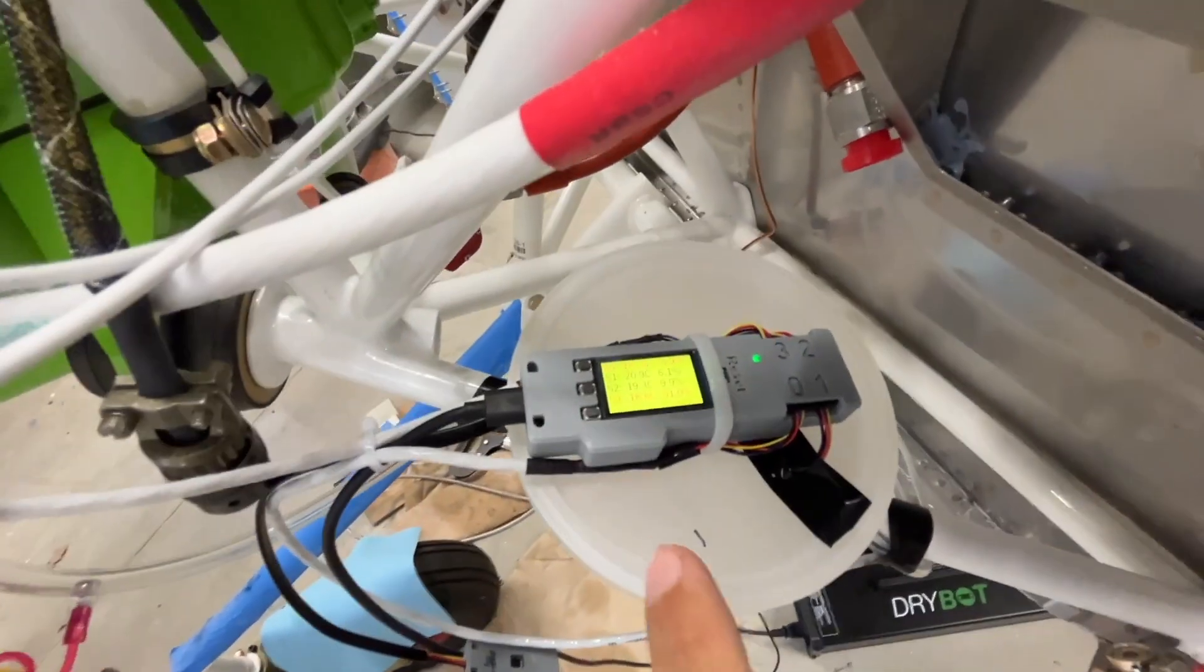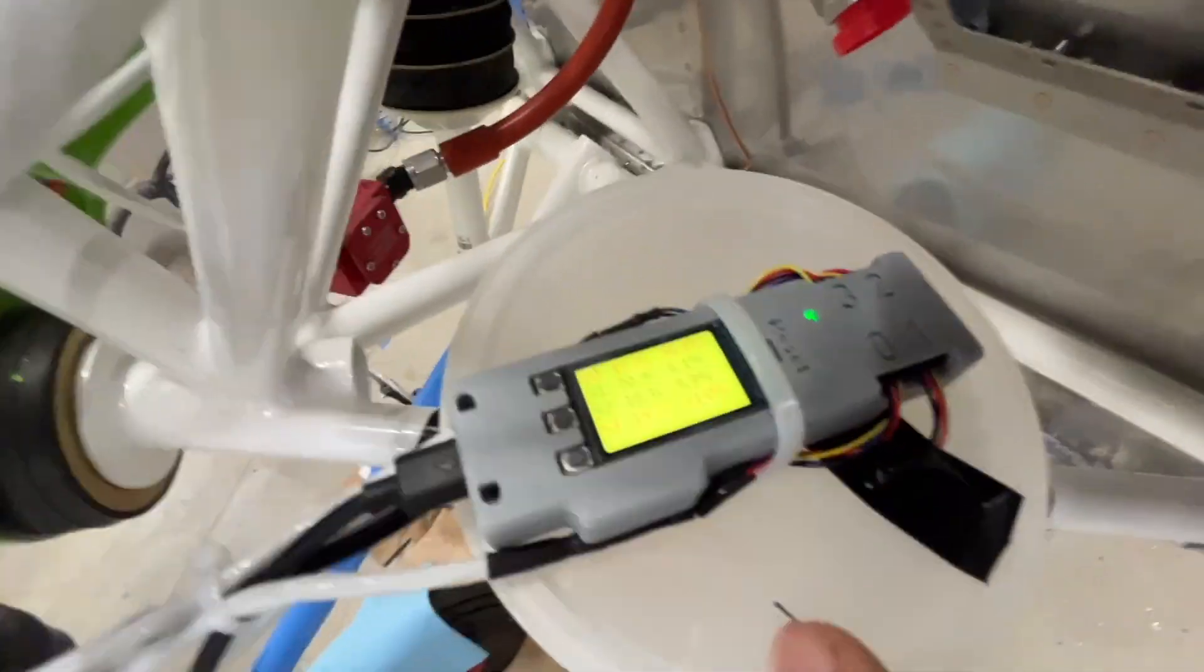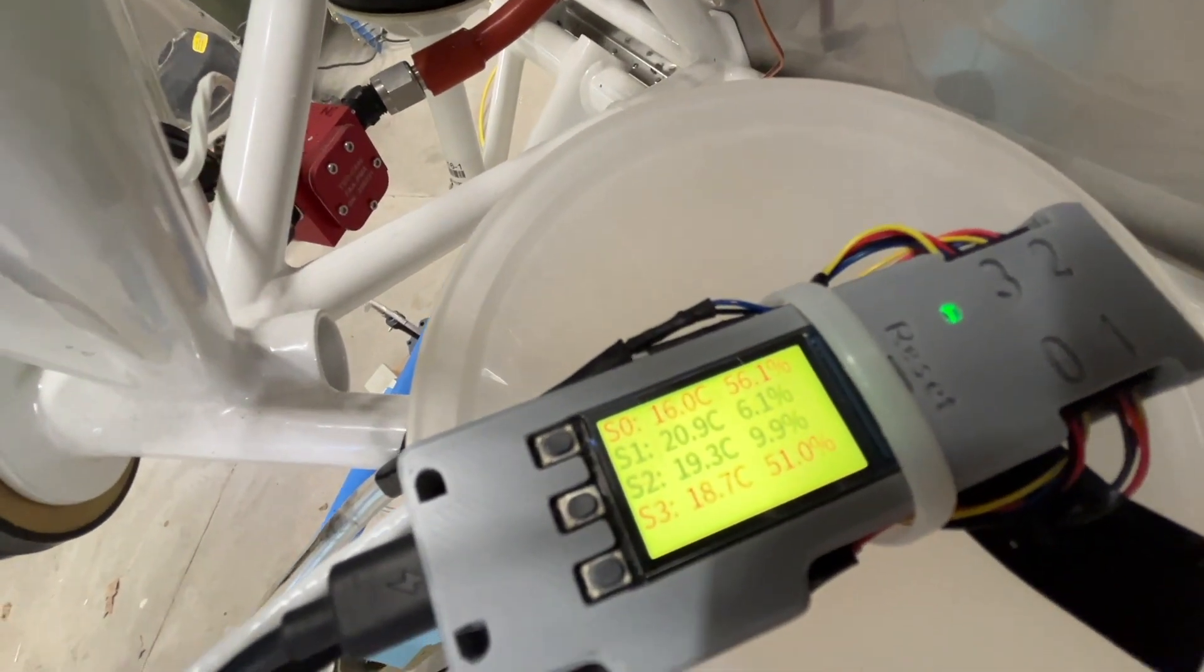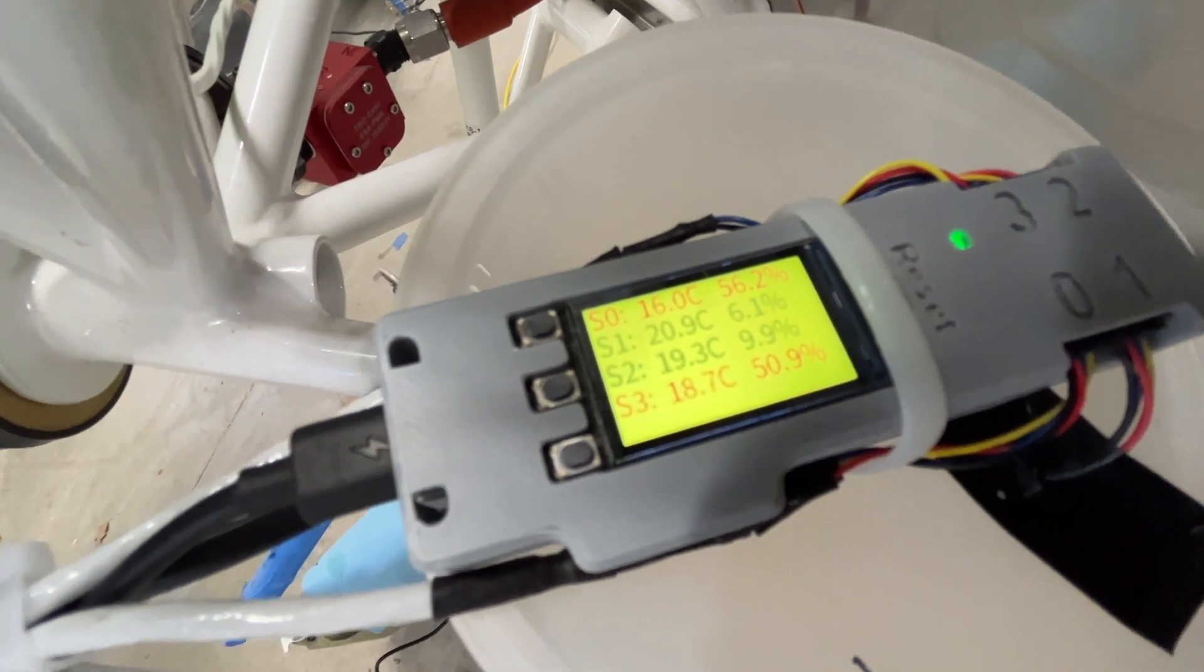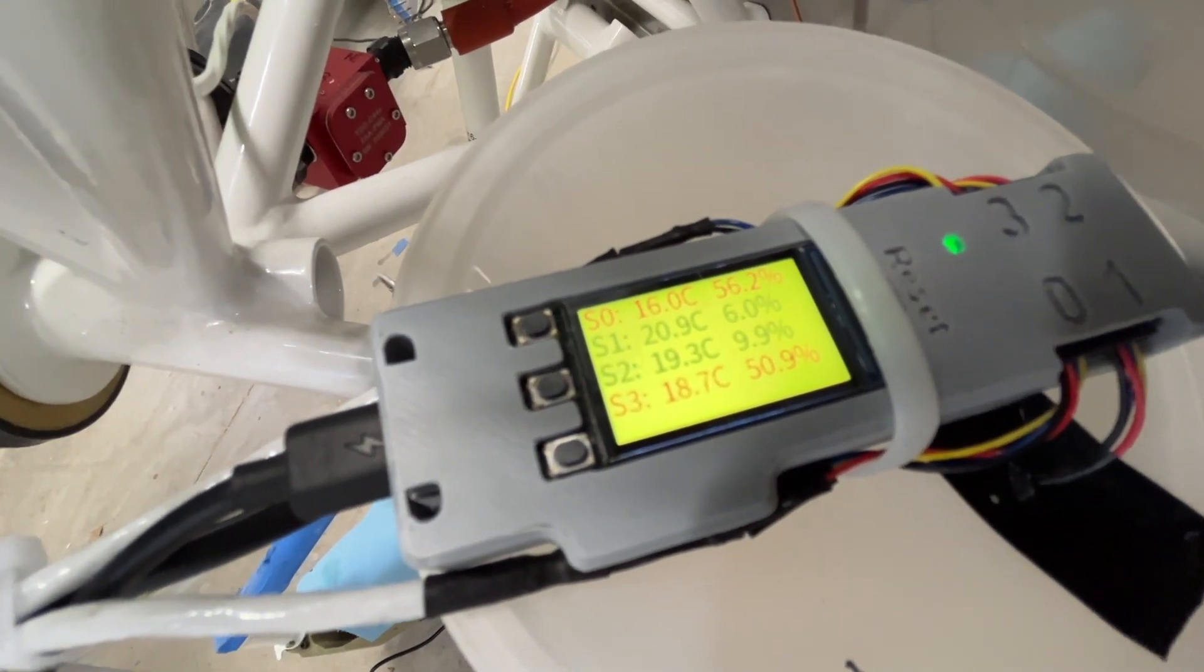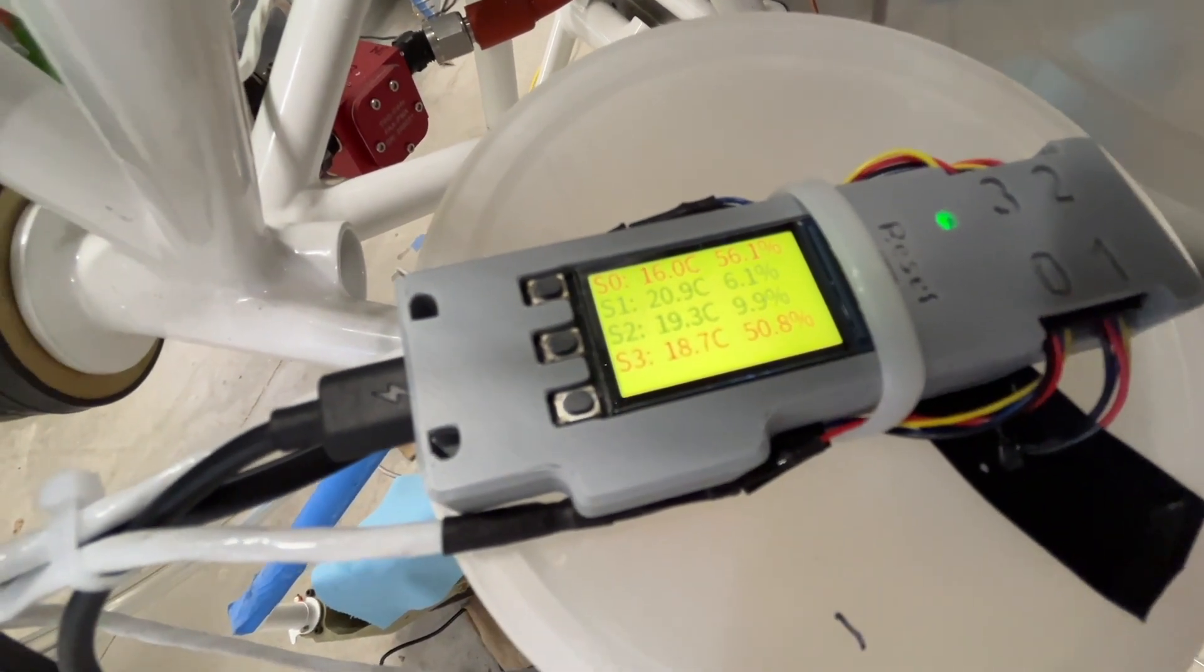And you can already see, don't know if you can read that, probably not. The two sensors, one is at the exit and one is in here. They're both under 10%. One's at 6%, the other one is at 10% or 9.9. The 6 is inside.